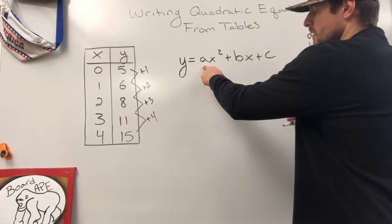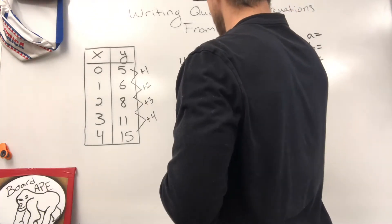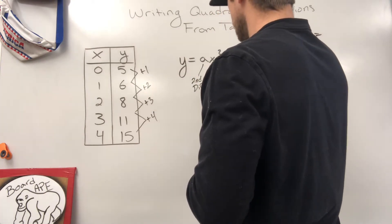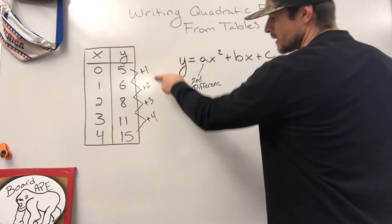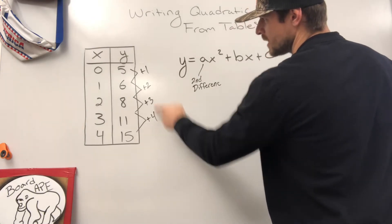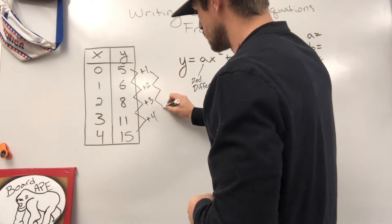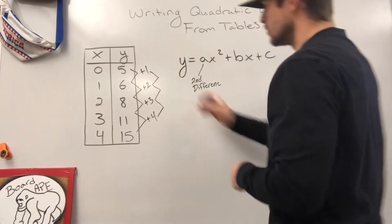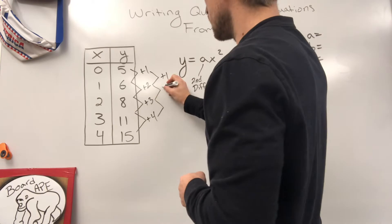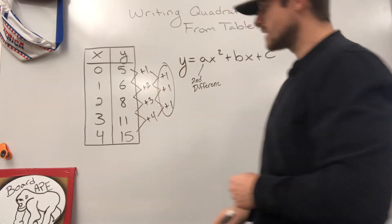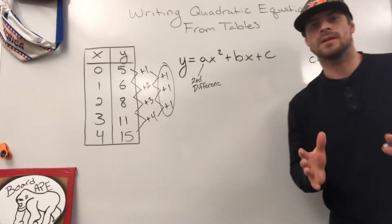a is found from your second difference. And what that means is we look here, we do not have a constant rate of change on our change in y, so we go to our second difference. Between those numbers, what's happening? One to two, plus one. Two to three, plus one, three to four, plus one. I like what I'm seeing. I'm going to circle it. That's going to help me to find my a.